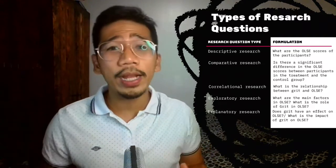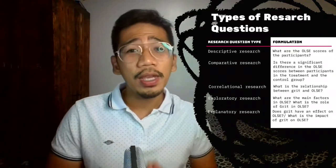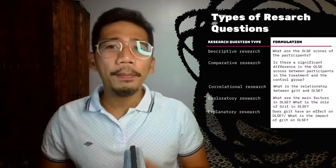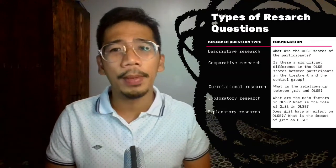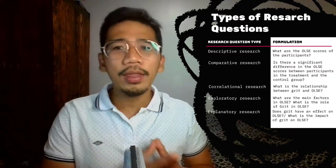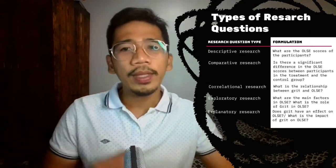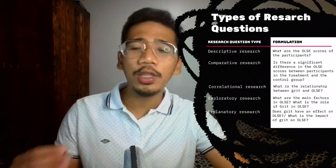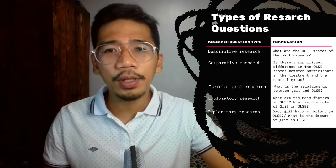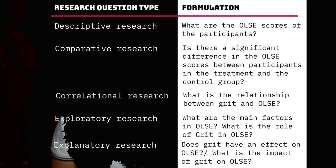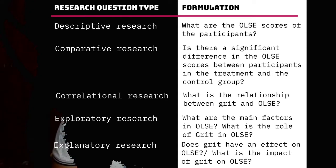Both qualitative and quantitative research require research questions. The kind of research question you use depends on what you want to find out and the type of research you want to do. It shapes your research design that you will have to formulate in the future. The table shown here presents some of the most common types of research questions. Bear in mind that many academic research questions will be more complex than these examples — often you will have to combine two or more types.